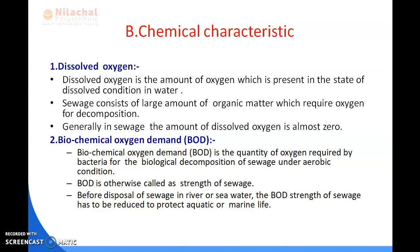Now moving to chemical characteristics. Chemical analysis is carried out on sewage in order to determine its different chemical characteristics. It includes tests for dissolved oxygen, BOD, pH, chloride content, nitrogen content, sulfates, and presence of fats, grease, and oils. These tests are conducted in the laboratory to find out the chemical characteristics of sewage.